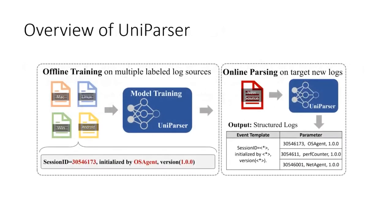Here is an overview of our UniParser. There are two phases for the proposed model: an offline cross-source training phase and an online parsing phase on the target log source. During the training phase, we take labeled log data from multiple sources as a training dataset, which is fed into the UniParser model for training. After training across heterogeneous log sources, we can apply our trained model directly to the target log source for parsing. It is worth noting that the trained log sources and the test log sources can be completely mutually exclusive.